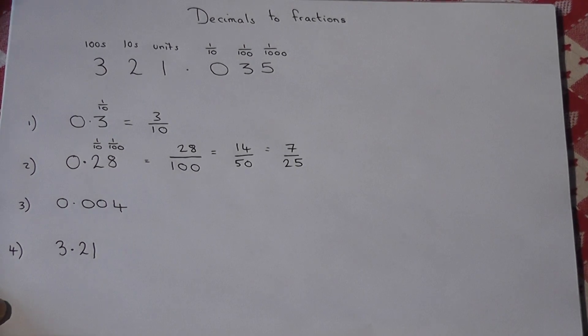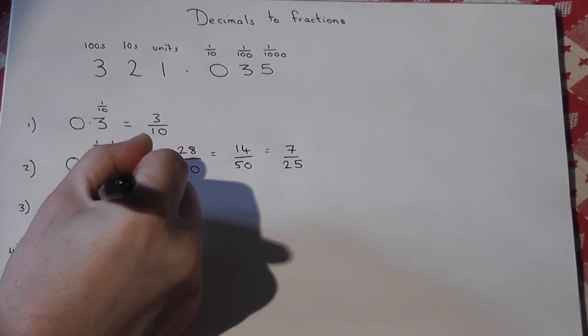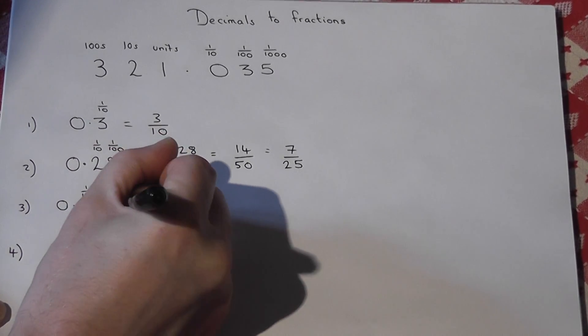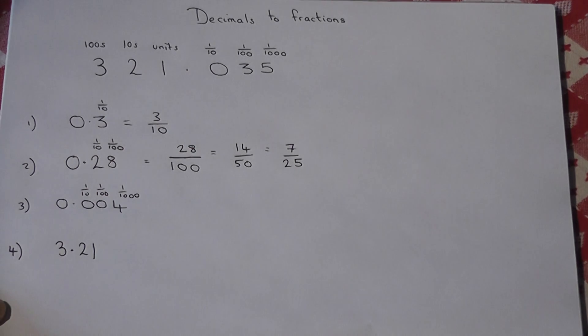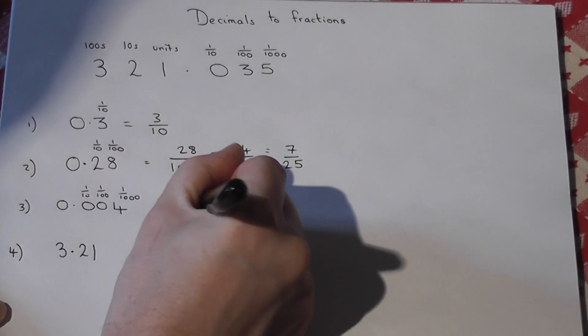So, the golden rule. For example, we look at the columns, so tenths, hundredths, and thousandths. Right, we look for the furthest most column to the right. That's thousandths. So this is over a thousand.